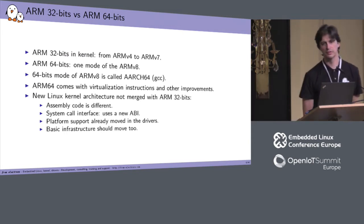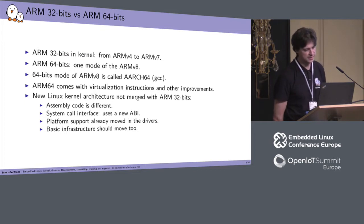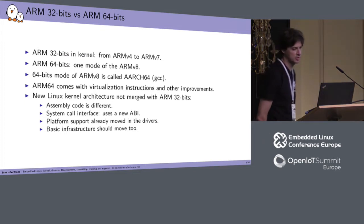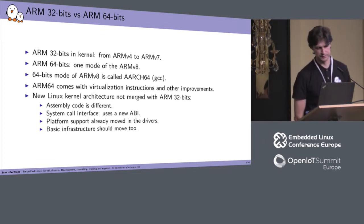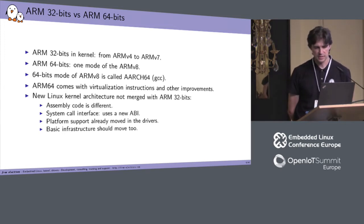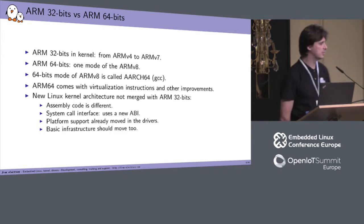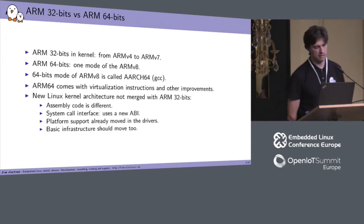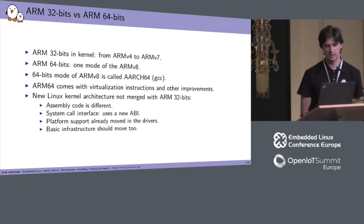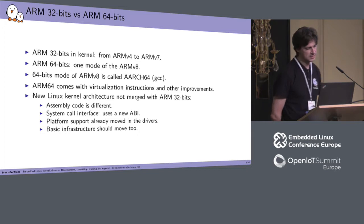ARM64 comes with support of 64-bits bus, but also with virtualization instructions and other improvements. This new architecture was not merged with ARM32-bit, and there were some questions about that at the beginning. The first reason is that the assembly code is different. Also, the system code interface is different — it uses a new ABI.